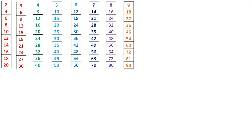9 times 1 is 9, 9 times 2 is 18, 9 times 3 is 27, 9 times 4 is 36, 9 times 5 is 45, 9 times 6 is 54, 9 times 7 is 63, 9 times 8 is 72, 9 times 9 is 81, 9 times 10 is 90.